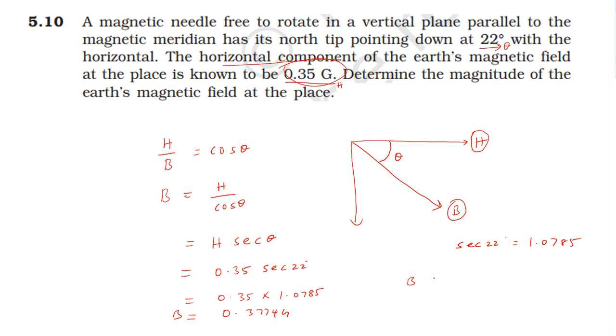Rounding up, the magnetic field is 0.38 gauss. This is the answer at the given place.